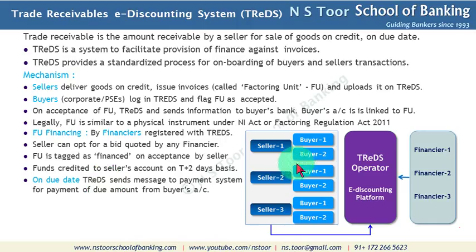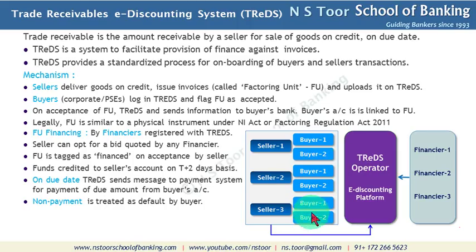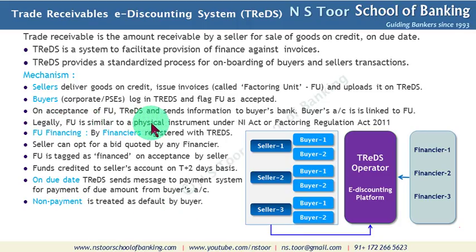On due date, the TReDS system generates a message to the payment system. The payment system, by debiting the buyer's account, recovers the payment and makes payment to the financier. If there is non-payment, it will be treated as a default by the buyer, and there is a legal remedy to recover this amount like other physical instruments.